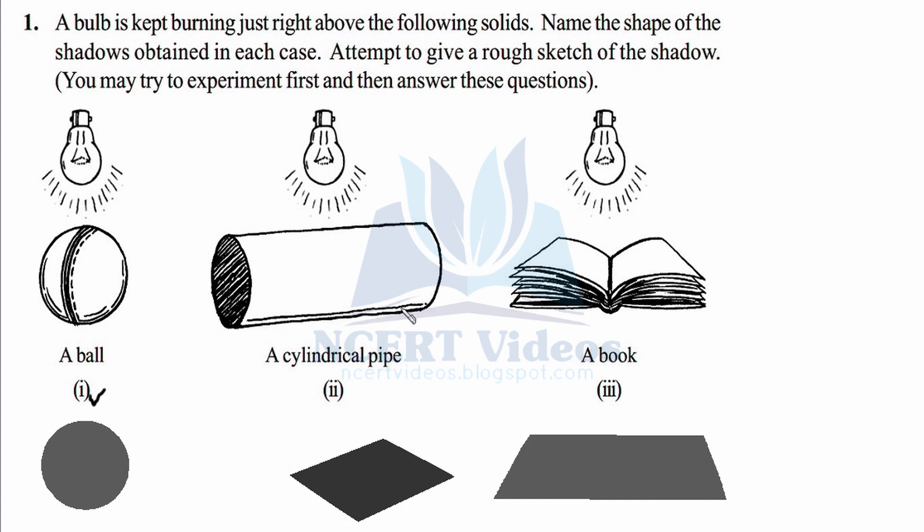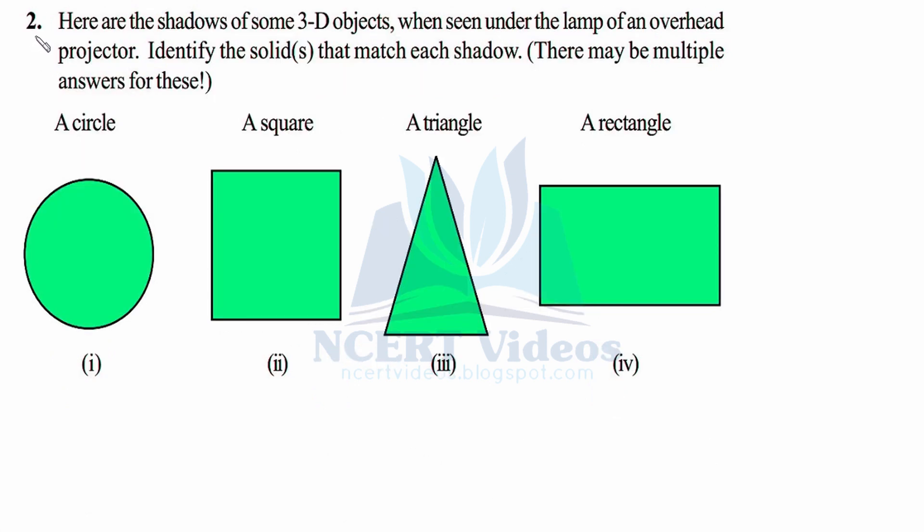So that was your first question. Second: here are the shadows of some 3D objects when seen under the lamp of an overhead projector. Identify the solids that match each shadow. There may be multiple answers for these. A circle, a square, a triangle, and a rectangle as your shadows.